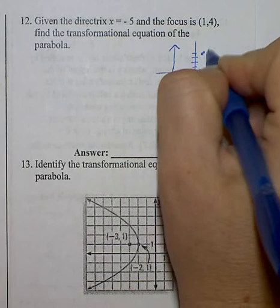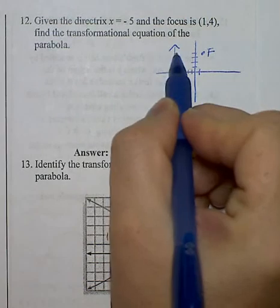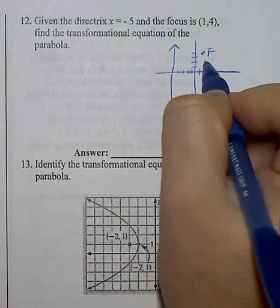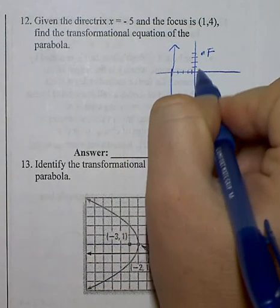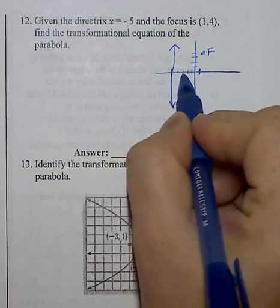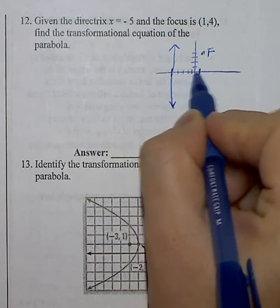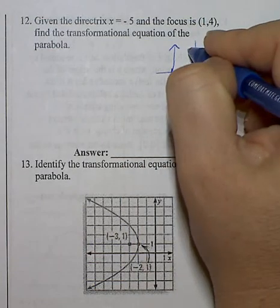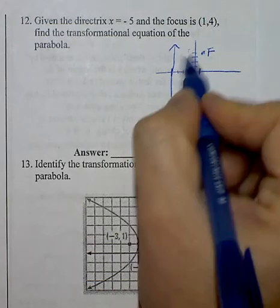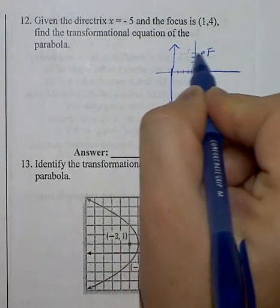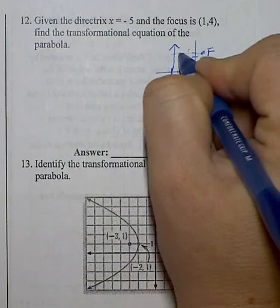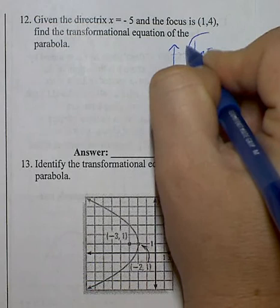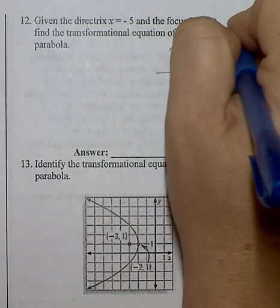Now remember that in between the directrix and the focus, directly in between you will always find the vertex. So this is a distance from here to here is a distance of 6. 1, 2, 3, 4, 5, 6. And half of 6 is 3. So I either go 3 to the left of the focus or 3 to the right of the vertex. But right along this line here, I'm going to move 3 over. 1, 2, 3. So this vertex now is occurring at negative 2, 4.